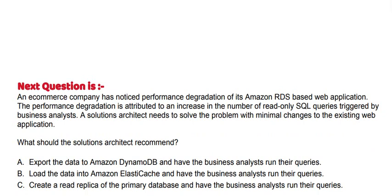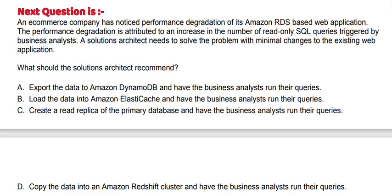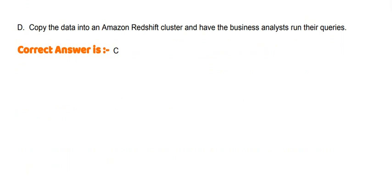Option A: Export the data to Amazon DynamoDB and have the business analysts run their queries. Option B: Load the data into Amazon ElastiCache and have the business analysts run their queries. Option C: Create a read replica of the primary database and have the business analysts run their queries. Option D: Run the data into an Amazon Redshift cluster and have the business analysts run their queries.